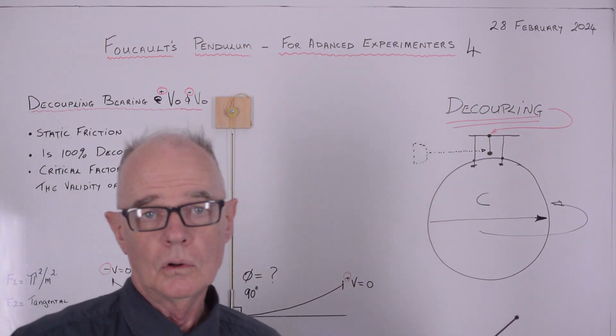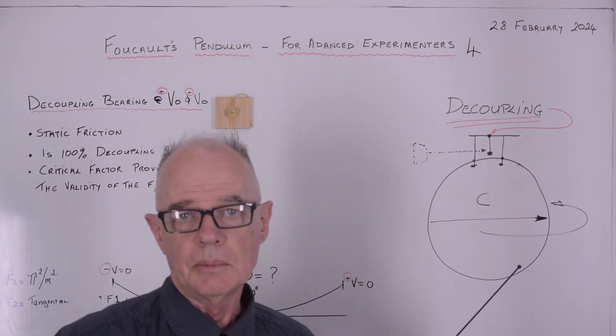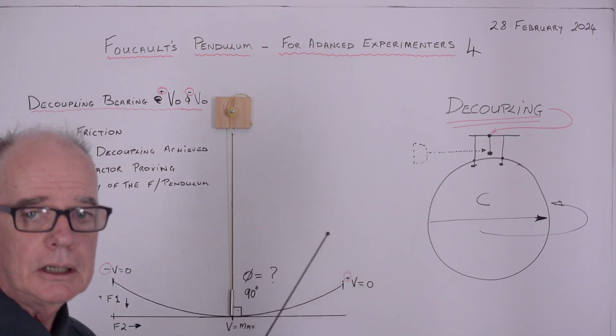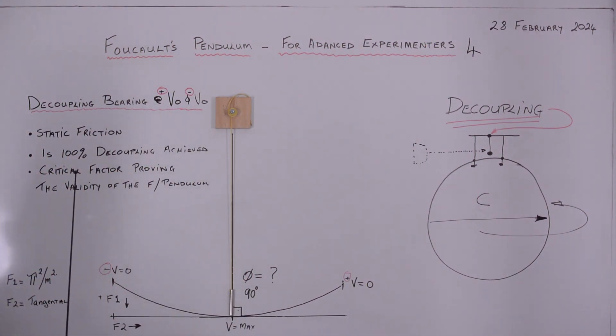Hello and welcome to video number 4 of Foucault's pendulum for advanced experimenters. Today's video will be focusing on the decoupling bearing at these two critical velocities, minus V and plus V, when the velocity of the pendulum is zero.